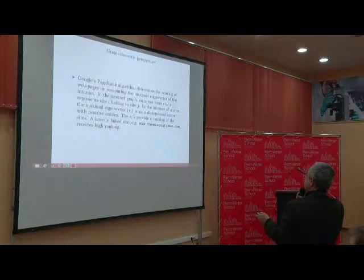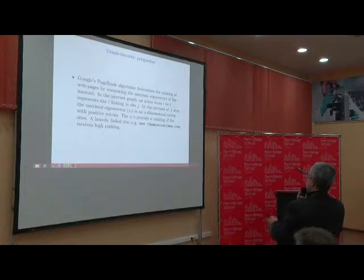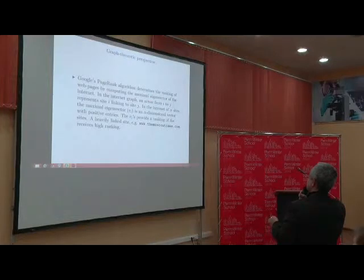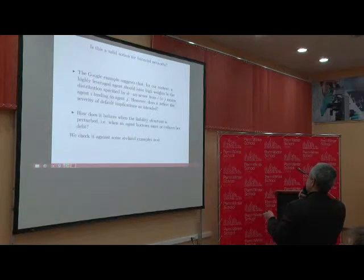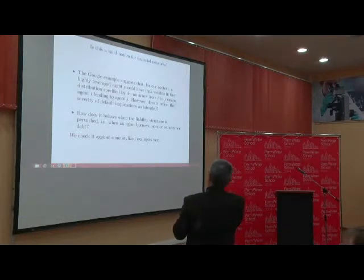A similar type of thing appears in Google's PageRank algorithm, which determines the ranking of web pages. This is a relative ranking of who is the most important in terms of connectedness. Google's PageRank is essentially the elements of the maximal eigenvector, telling you which pages are the most important. In our case it is a bit more than that — we want to get a distribution for D. D tells us who is going to be the most vulnerable in the network, and we also want to do perturbation and robustness analysis.